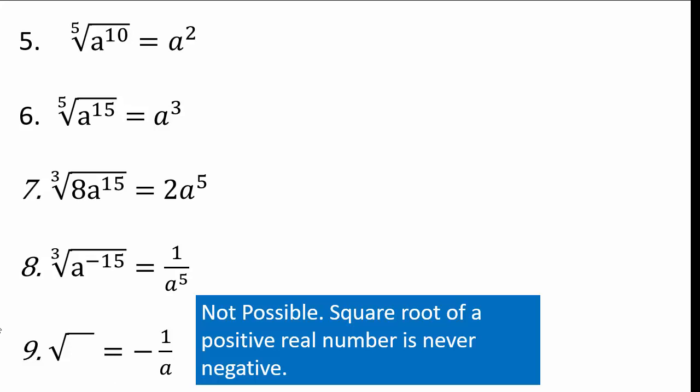The last one — the answer is: not possible. Because square root of a positive real number is never going to give you a negative answer. Square root of a positive real number is never negative, so this is no solution. What we're trying to teach you is that just because somebody asks a question does not mean it always has an answer. You have to be confident in your logic and say: not possible, for this reason.